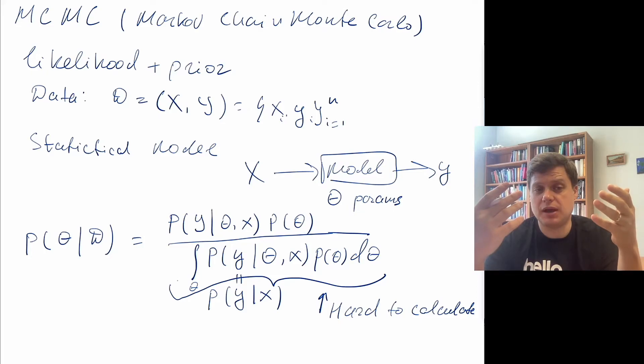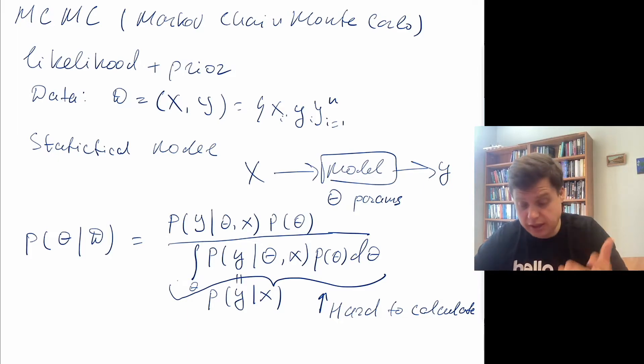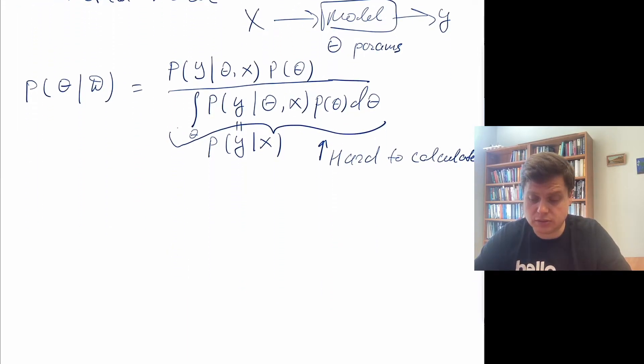And whenever things become high dimensional, whenever you have high dimensional set of parameters theta, the numerical integration fails. So this trapezoid rule that numerical analysis would use to calculate an integral doesn't work in this setting. So we have to do something else. And MCMC is the technique to do that.